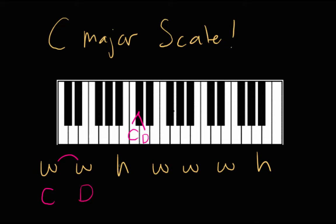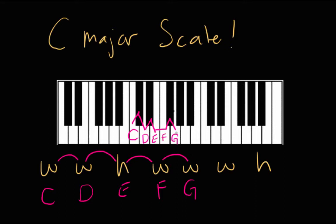D is the second note in the C major scale. Then from D we're going to go another whole step — from D up to D sharp, which is a half step, and then to E, which is another half step. So a whole step up from D is E. Then from E, we're going to go a half step up, bringing us from E to F, because F is just a half step up from E. So far we have C, D, E, F. Then we go a whole step up from F: the first half step is to F sharp, and then another half step to G. So the fifth note in the C major scale is G.